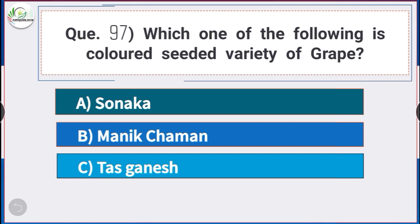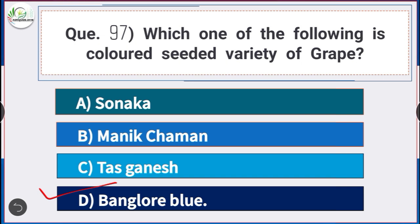Question number 97: Which of the following is a colored seeded variety of grape? Answer is option D — Bangalore Blue. The colored seeded variety of grape is Bangalore Blue.